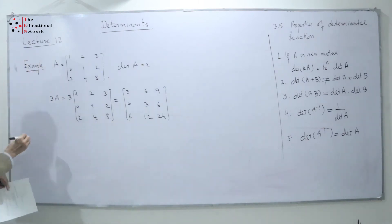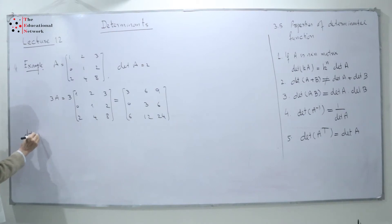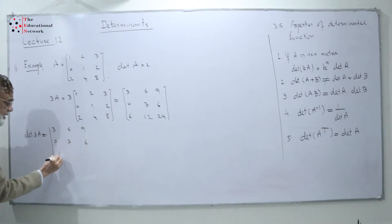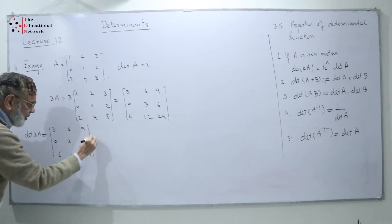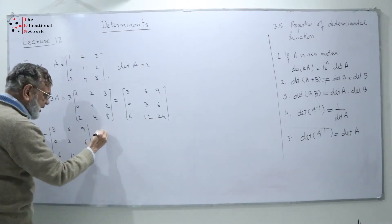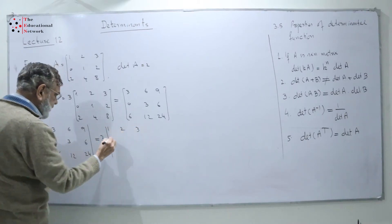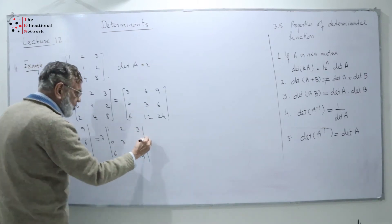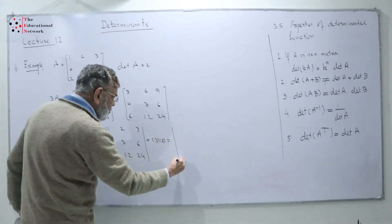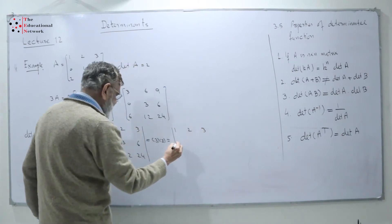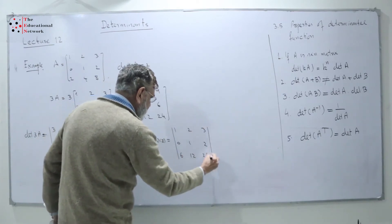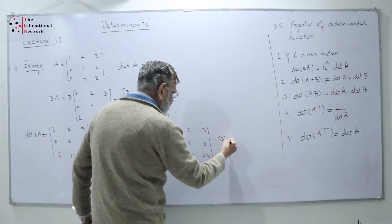I find determinant of 3A equal to the determinant of the matrix with rows 3, 6, 9; then 0, 3, 6; then 6, 12, 24. I take 3 common from the first row to get 3 times the matrix with rows 1, 2, 3; then 0, 3, 6; then 6, 12, 24. Then I take 3 common from the second row, getting 3 times 3 with rows 1, 2, 3; then 0, 1, 2; then 6, 12, 24.